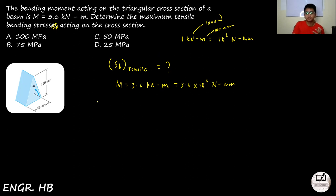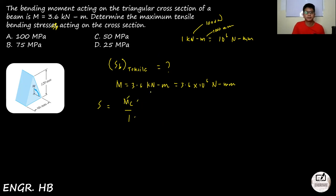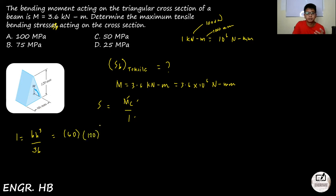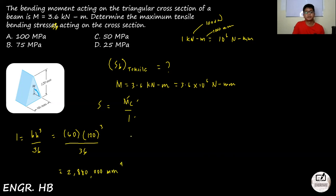The bending stress formula is Sb = MC/I. We have M, so we need C and I. The moment of inertia of a triangle is I = BH³/36. With base B = 60 mm and height H = 120 mm: I = 60 × 120³ / 36 = 2,880,000 mm⁴.